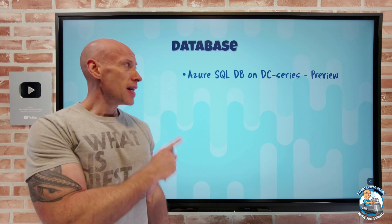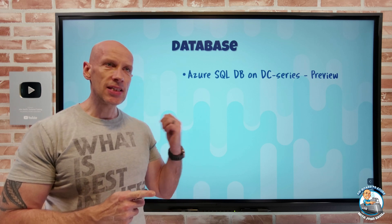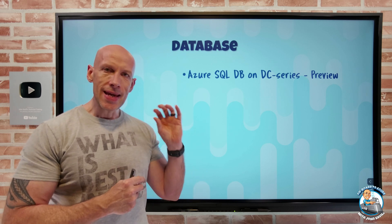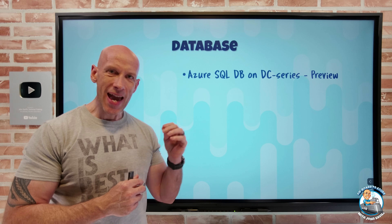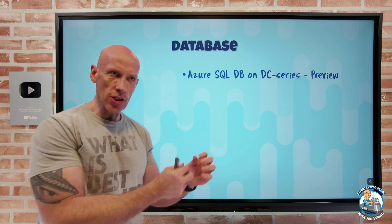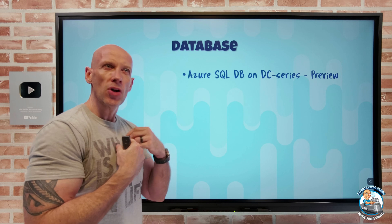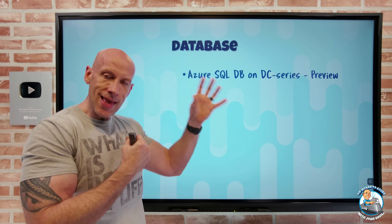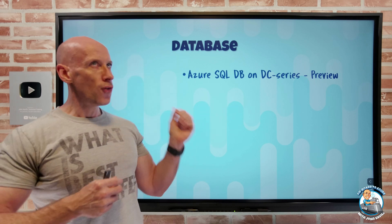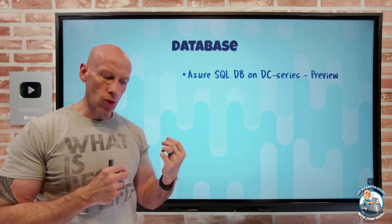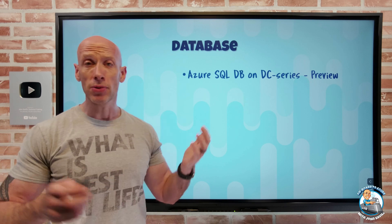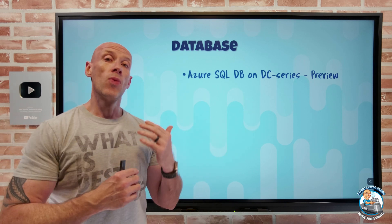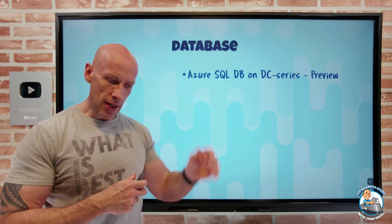The other update: Azure SQL Database on the DC series. The DC series is the confidential compute, using the Intel processor with SGX — the Software Guard Extension. I have that secure enclave where I modify my application to have sensitive memory in that enclave. Before, there was a limit of eight virtual cores, but now it supports up to 40 — a big improvement on scalability with always encryption.